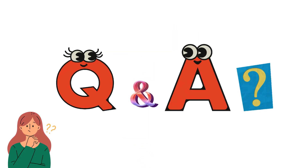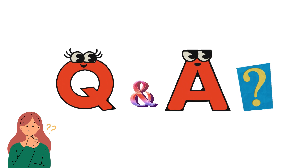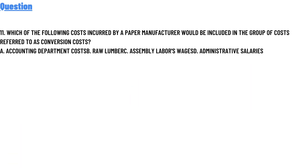Today's question is number 11: Which of the following costs encouraged by manufacturers would be included in the group cost referred to as conversion cost? Option A: accounting department cost. Option B: raw materials.